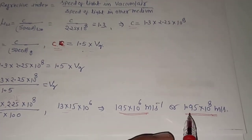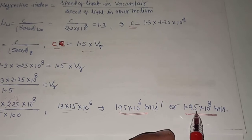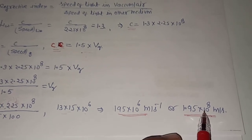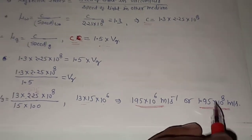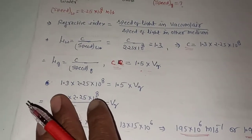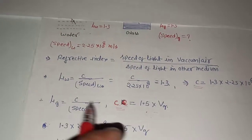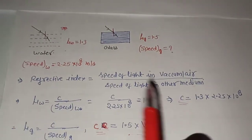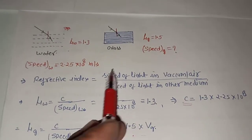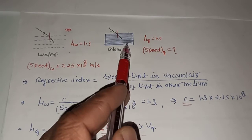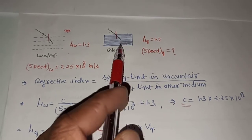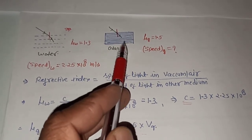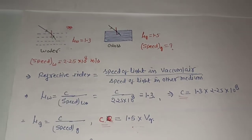We can write this as 1.95 × 10⁸ m/s, since adding 2 to the power gives 10⁸. So by this method and formula, we can easily find the speed of light in glass as 1.95 × 10⁸ m/s.